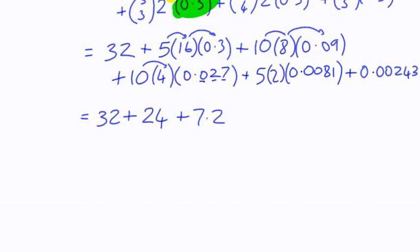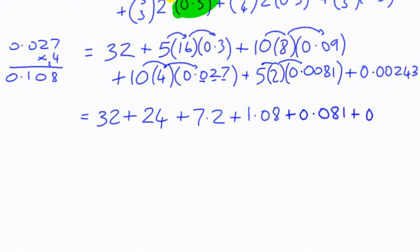Next, we've got 10 times 4 is 40, multiplied by 0.027. 0.027 multiplied by 4 is 0.108, multiply by 10, so that's 1.08. We've got 5 times 2 is 10, multiplied by 0.0081, and then we've got our last value.